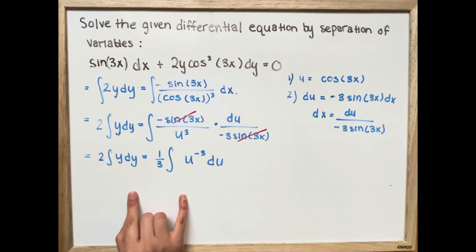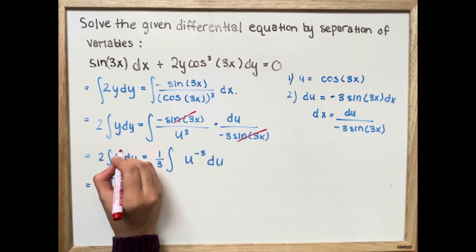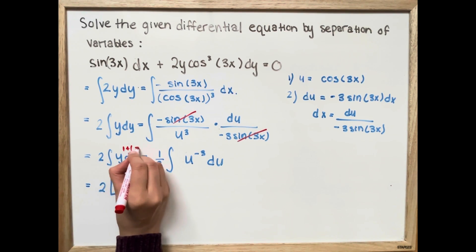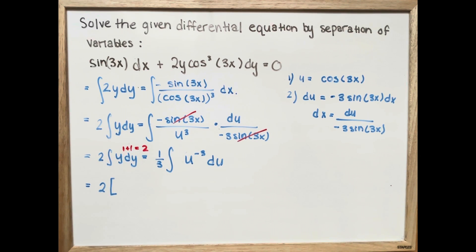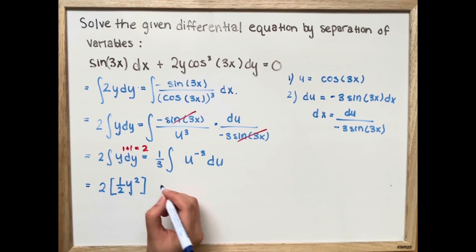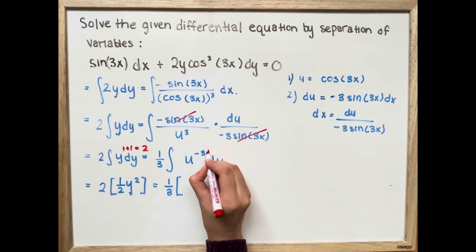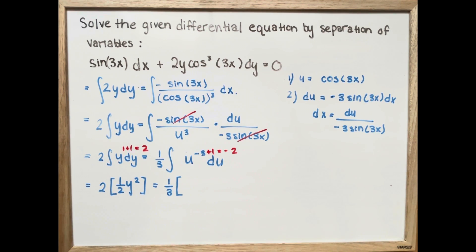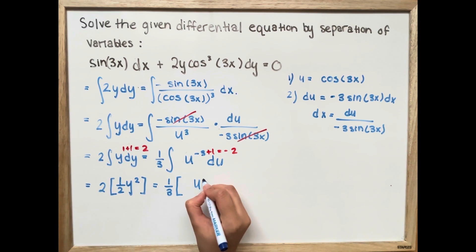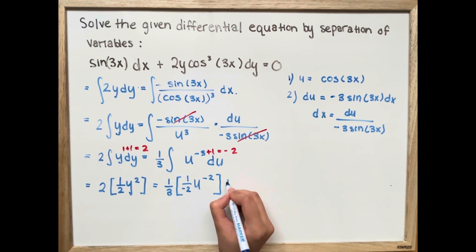Now both sides are simple integrals. On the left, y has an exponent of 1, so adding 1 gives exponent 2, yielding y squared over 2. On the right, 1 over 3 times the integral of u to the negative 3: adding 1 gives exponent negative 2, so we get 1 over 3 times u to the negative 2 over negative 2, plus c.